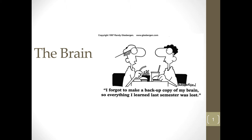Today we're going to talk about the brain one level up. So instead of just looking at the basic neurons, we're going to look at some of the different functional areas of the brain and how we might examine the brain. The brain is largely what makes you who you are — in fact, it's almost entirely who you are. The mind is what the brain does. It's what makes you, you.